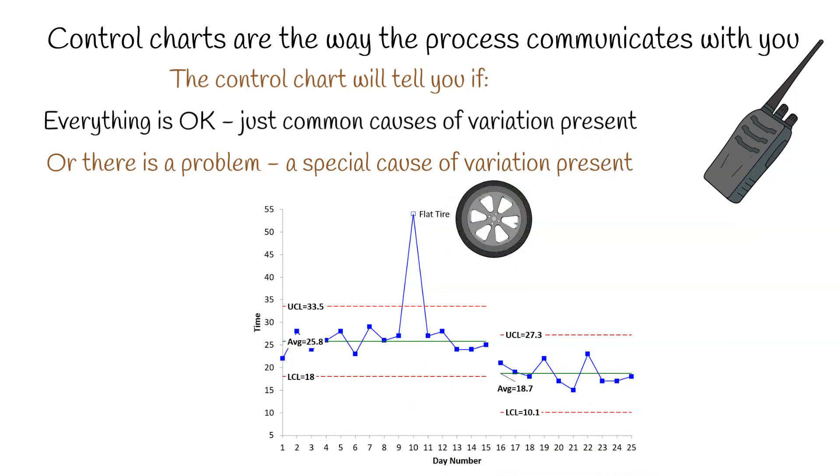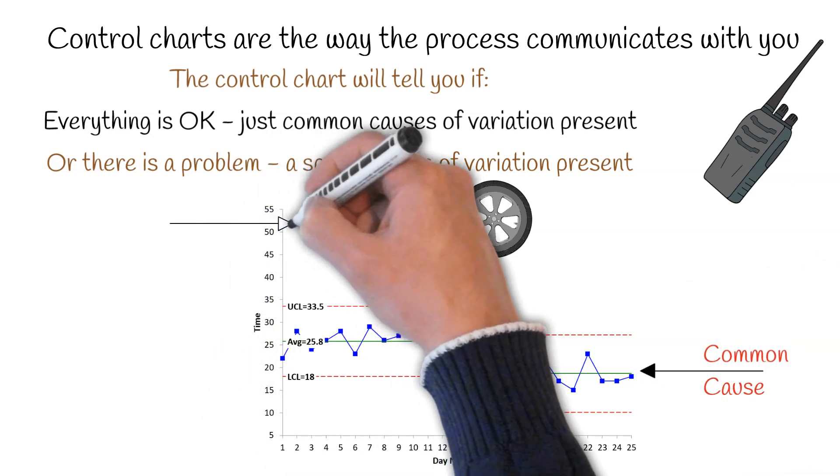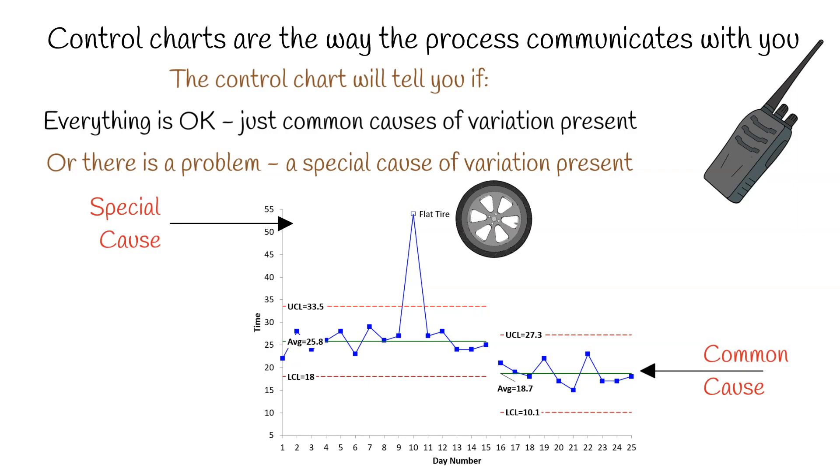Here's an example of a control chart on driving to work. You have a flat tire one day. That's a special cause of variation. And the common cause is defined by the control limit range.